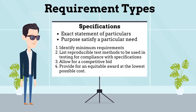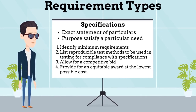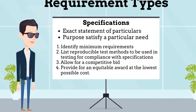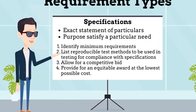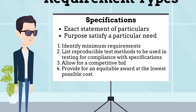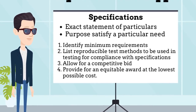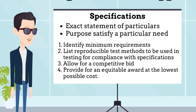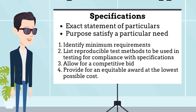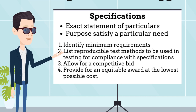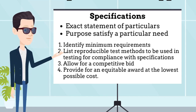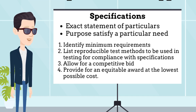The final requirement type is Specifications. A specification is a detailed, exact statement of particulars, especially a statement prescribing materials, dimensions, and quality of work for something to be built, installed, or manufactured. The overall purpose of a specification is to provide a basis for obtaining a product or service that will satisfy a particular need at an economical cost and to invite the maximum reasonable competition.